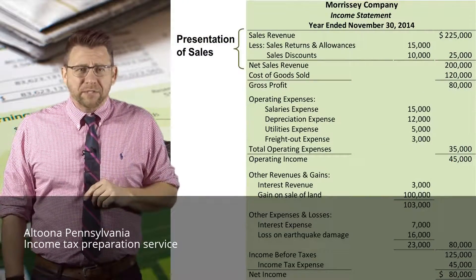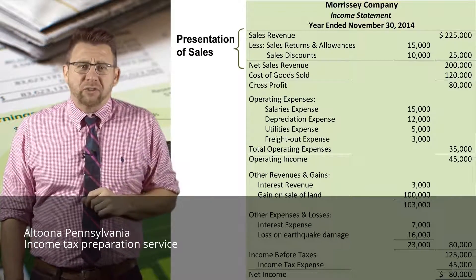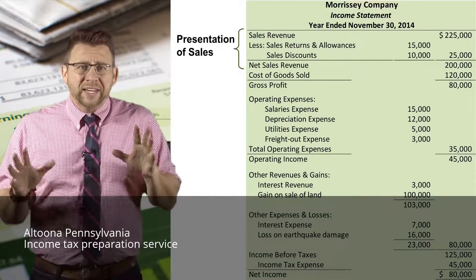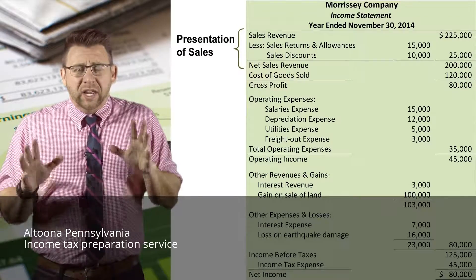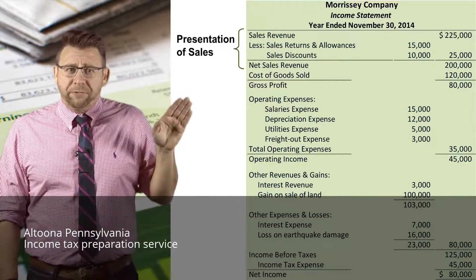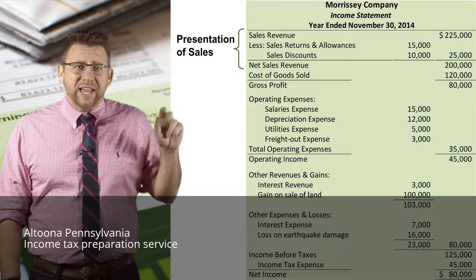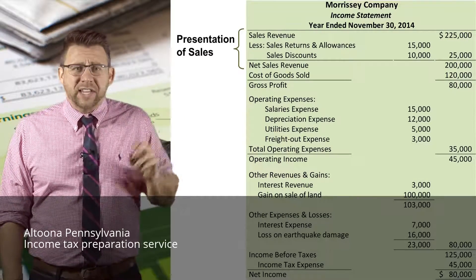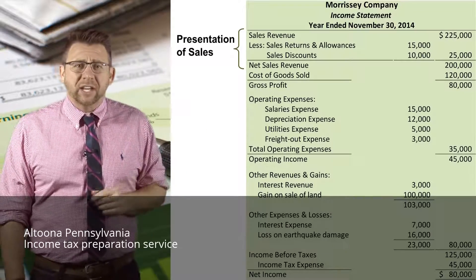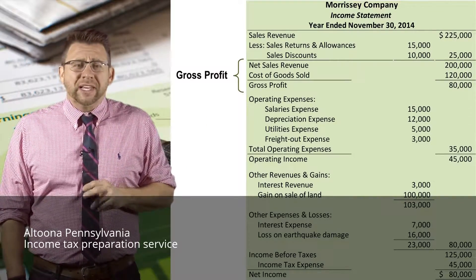The multi-step income statement starts with the calculation of net sales revenue. No other revenue is included in this section. Sales revenue is reported first, then sales returns and allowances and sales discounts are deducted to arrive at net sales revenue.